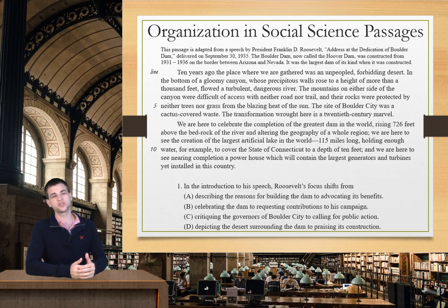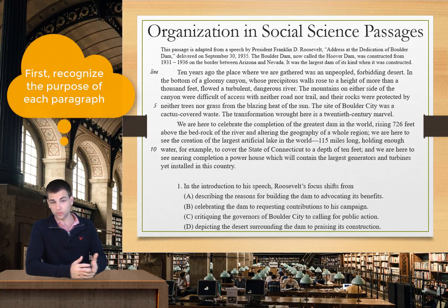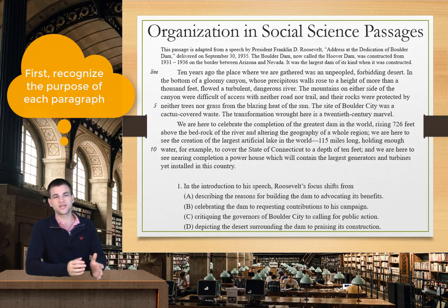Alright, so as I mentioned, these questions are asking about the passage as a whole. And in this case, they're asking us how Roosevelt's focus is shifting from one paragraph to the next. So in order to understand how the focus is shifting, we really have to understand the entire passage. And so we'll have to dissect each paragraph, and then figure out what the relationship between those paragraphs is.